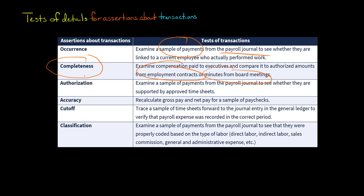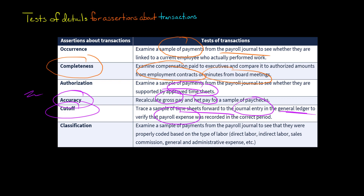To test the authorization assertion, the auditor could examine a sample of payments from the payroll journal to see whether they're supported by approved timesheets — specifically, timesheets with a supervisor's signature confirming the employee actually worked. For accuracy, the auditor could recalculate gross pay and net pay for a sample of paychecks. For cutoff, the auditor could trace a sample of timesheets forward to the general ledger journal entry and verify payroll expense was recorded in the appropriate period. For classification, the auditor could check that payments were properly coded — for example, sales commissions coded to sales commission expense, not to manufacturing costs affecting inventory.